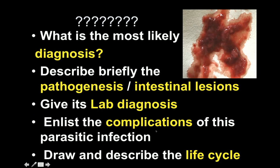Questions related to this scenario would be: what is the most likely diagnosis? Describe briefly the pathogenesis or the intestinal lesions produced by this pathogen. Give the lab diagnosis, or list the complications of this parasitic infection, or draw and describe the life cycle.